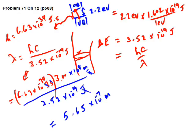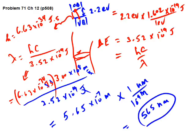Converting to nanometers: 5.65 × 10⁻⁷ m × (1 nm / 10⁻⁹ m) = 565 nm. So 565 nanometers is the wavelength of light emitted from this gallium phosphide LED material.